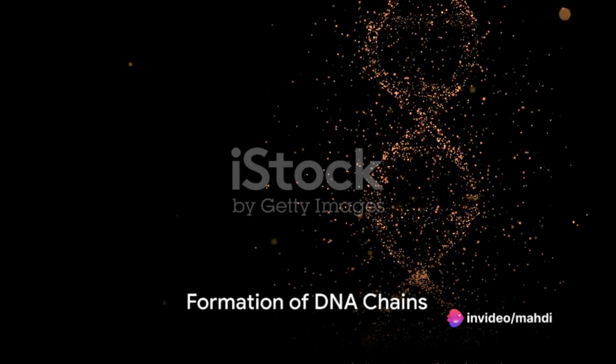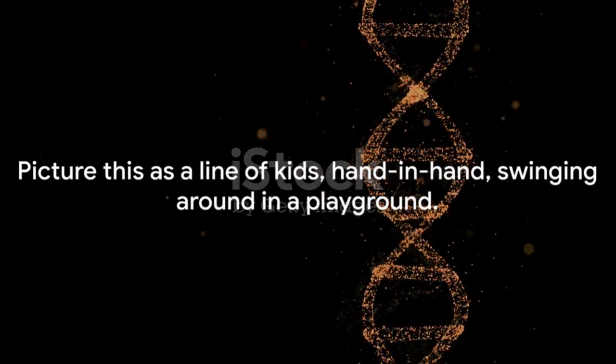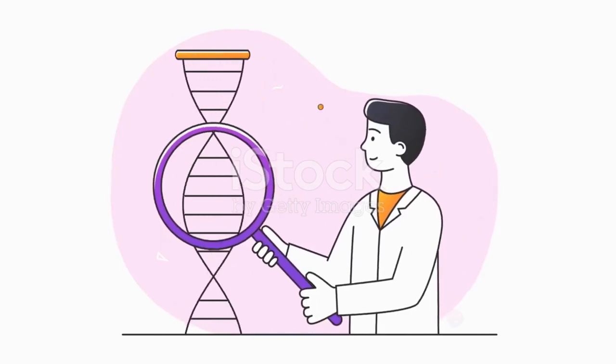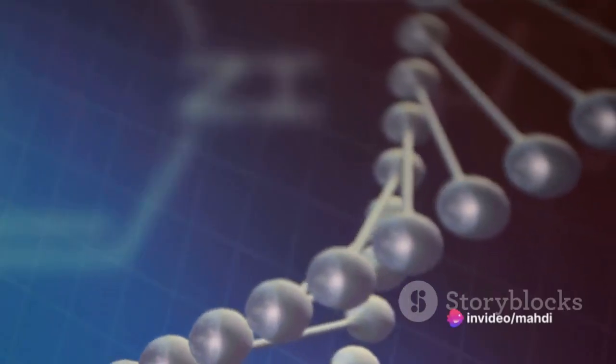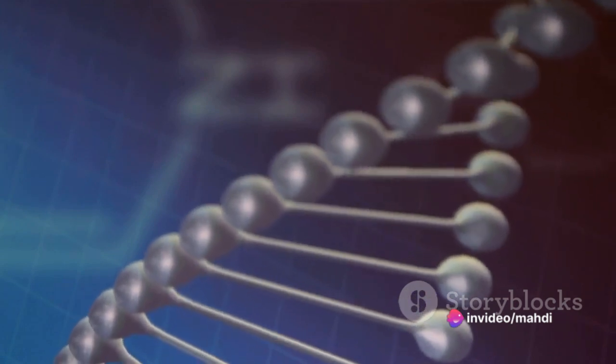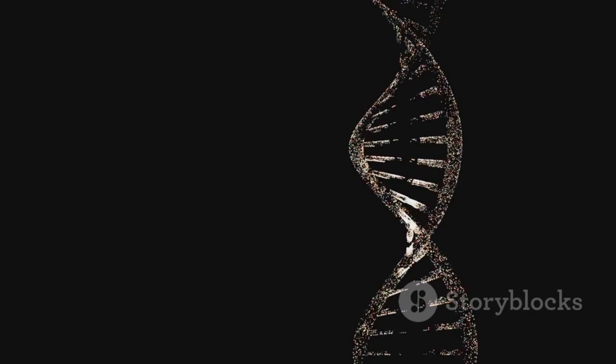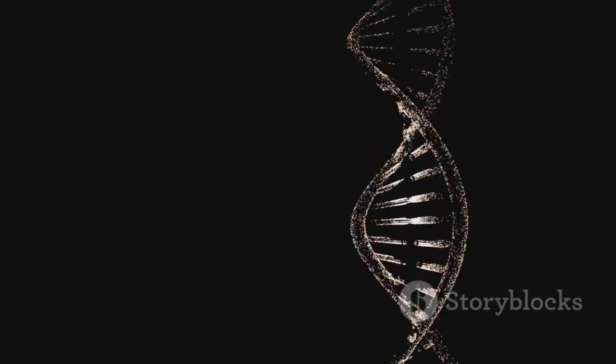These nucleotides form chains through phosphodiester bonds. Picture this as a line of kids, hand in hand, swinging around in a playground. The hands represent the phosphodiester bonds, linking the three-hydroxyl group of the deoxyribose sugar of one nucleotide to the phosphate of the next. This forms the backbone of the DNA structure, a continuous chain of sugar and phosphate.